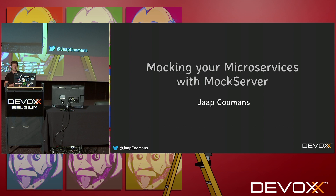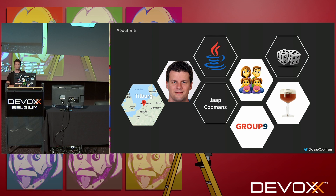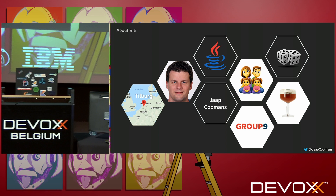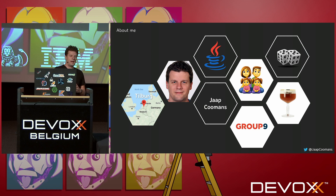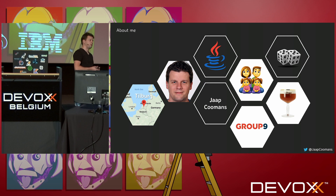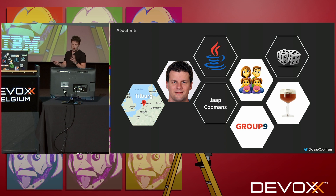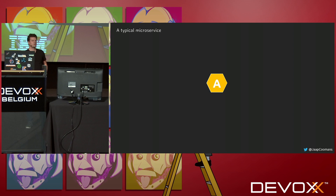Welcome, thank you for coming. Last talk of the day, so you're all the die-hards — really glad you're here. My name is Jaap Komans, I live in Tilburg in the Netherlands, and I work as a Java developer and software architect for Group 9. Outside work I'm a father and husband, I love to play board games, and with those board games I like to drink a good beer. But enough about me — you're here for the microservices.